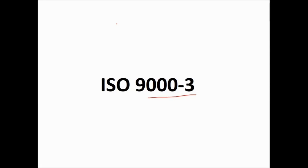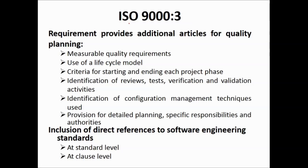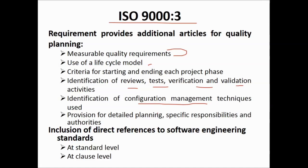Let us talk about ISO 9003. The requirements of ISO 9003 provide additional articles for quality planning, including measurable quality requirements, use of lifecycle model criteria for starting and ending each project phase, identification of reviews, tests, verification and validation activities, identification of configuration management techniques used, provision for detailed planning, specific responsibilities and authorities, and inclusion of direct references to software engineering standards at both standard level and clause level.